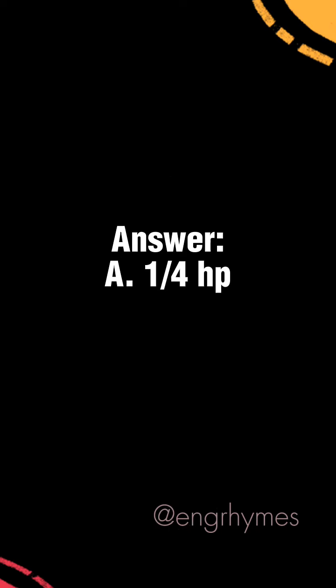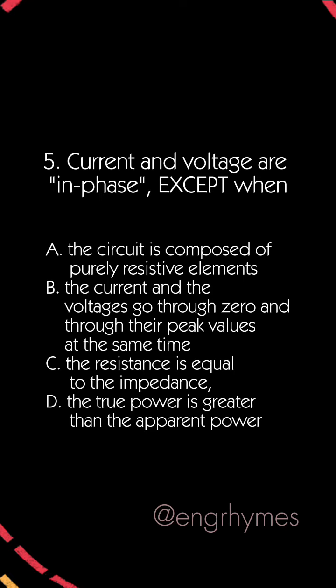Answer: A, one-fourth horsepower. Current and voltage are in phase except when: A) The circuit is composed of purely resistive elements, B) The current and voltages go through zero and through their peak values at the same time, C) The resistance is equal to the impedance, D) The true power is greater than the apparent power.